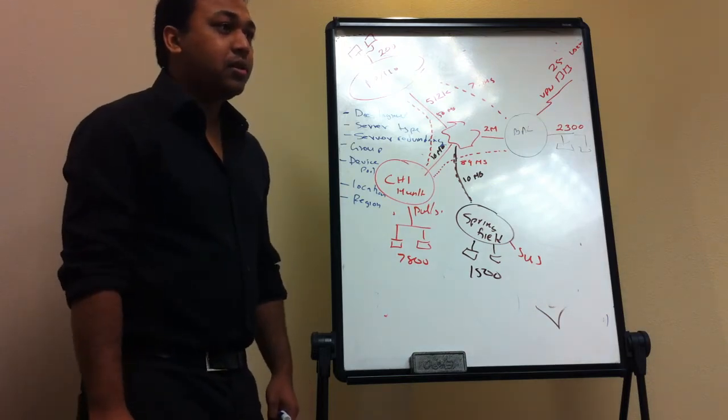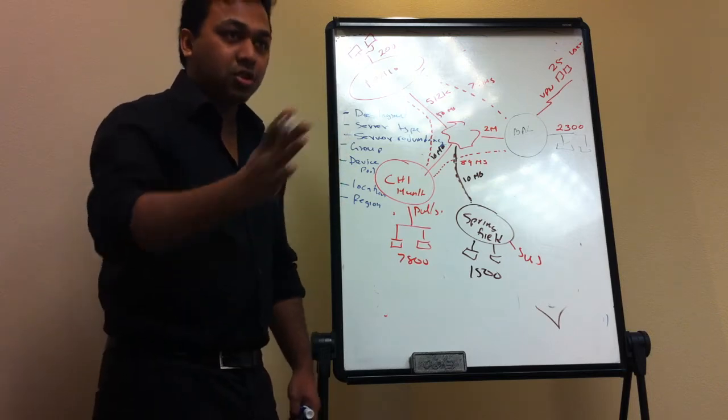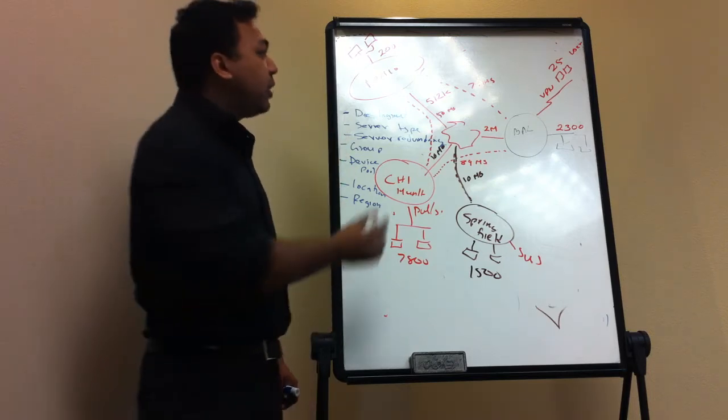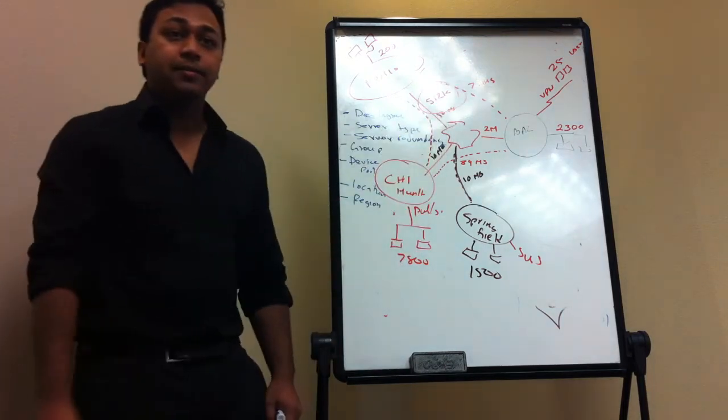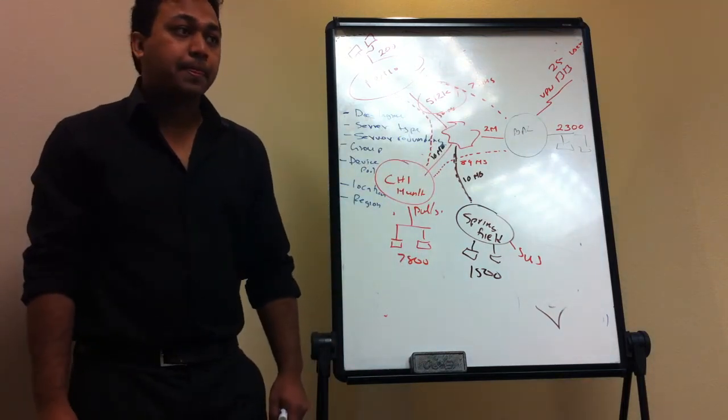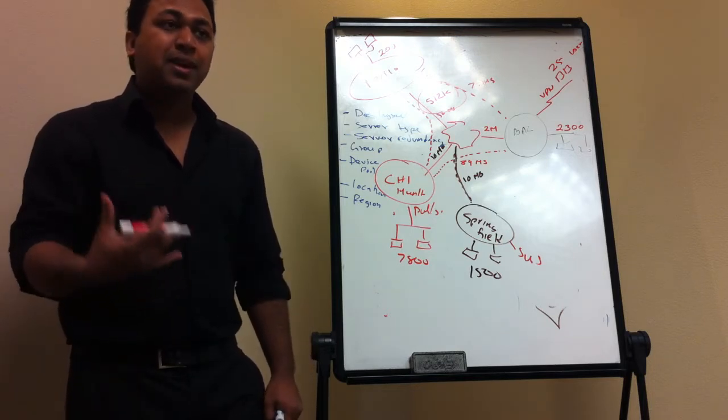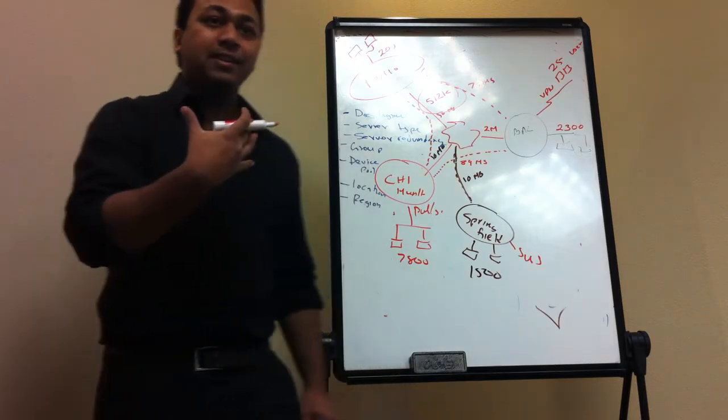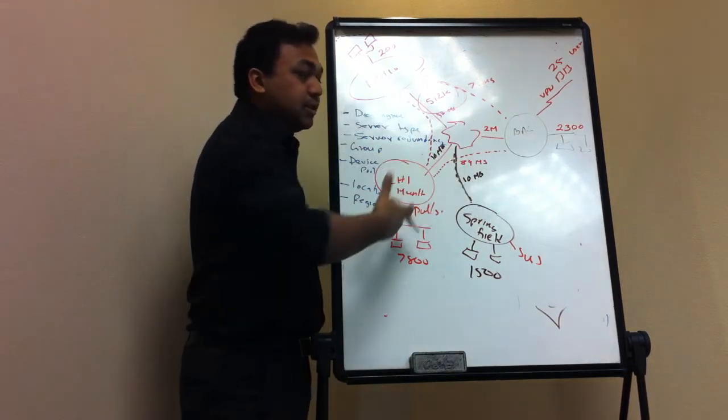What about Mexico? You'd put SRST or Call Manager Express. The reason why you don't want to put a server there is because the bandwidth is only 512K, and it's not enough users to justify a full call manager. So it makes sense to put Mexico as a Call Manager Express.